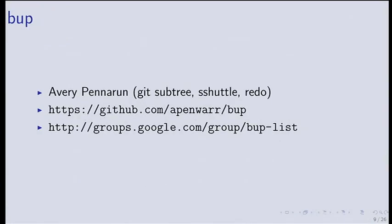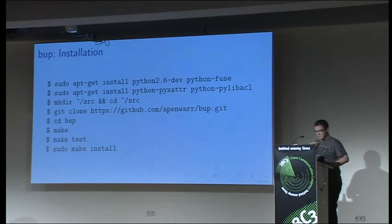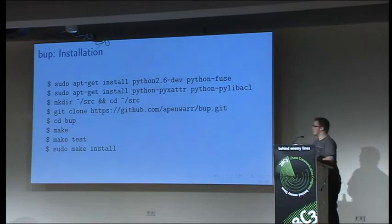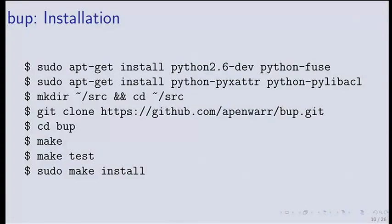BAP is software that uses the Git file format. It's developed by EveryPaneroon, who also developed git-subtree. All development is done over the mailing list — no bug tracker, no pull requests on GitHub; patches are sent to the mailing list. At the moment BAP isn't production-ready yet. There's a Debian package, but you want to be bleeding edge with BAP, so clone the repository — no configure step required.